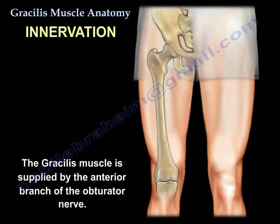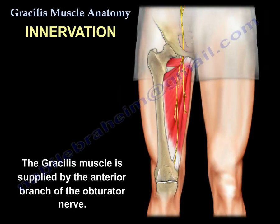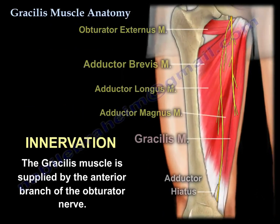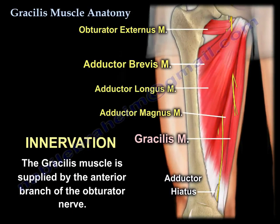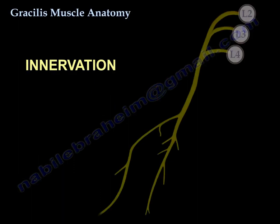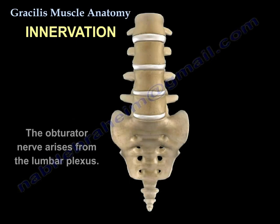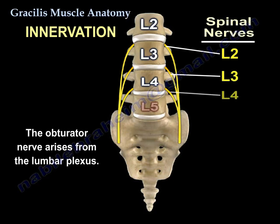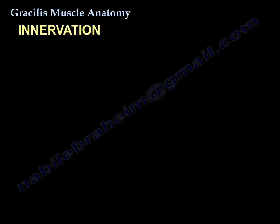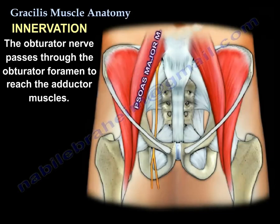Nerve supply: the anterior branch of the obturator nerve. The obturator nerve arises from the lumbar plexus at L2, L3, and L4, and goes through the obturator foramen to reach the adductor muscles.